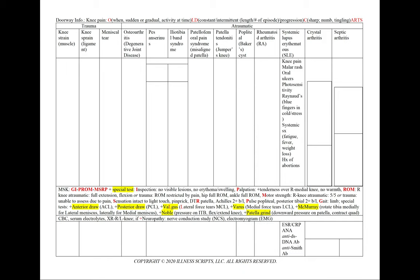In systemic lupus erythematosus, we'll see knee pain, a malar rash, or oral ulcers. The patient can also complain of photosensitivity, Raynaud's, or blue fingers in the cold or times of stress. We can note positive systemic symptoms including fatigue, fever, or weight loss, and a history of abortions in the OB/GYN history. We'll order an ESR/CRP, ANA, anti-double-stranded DNA antibodies, and anti-Smith antibodies.